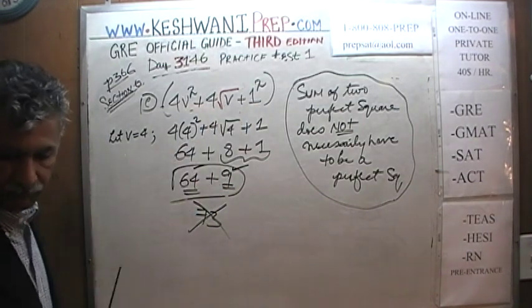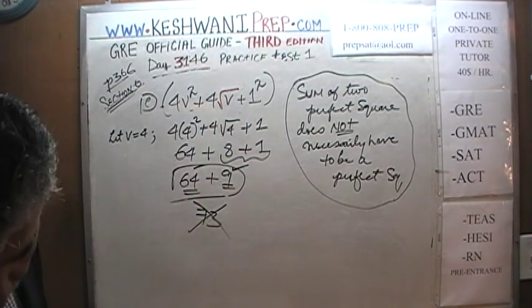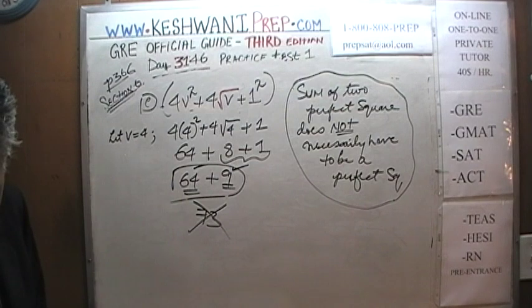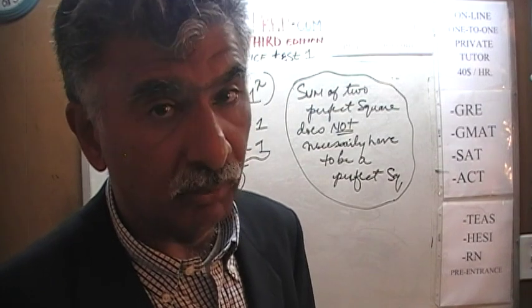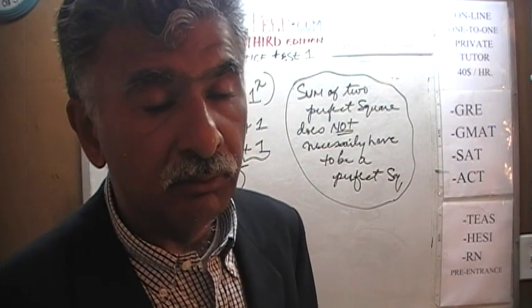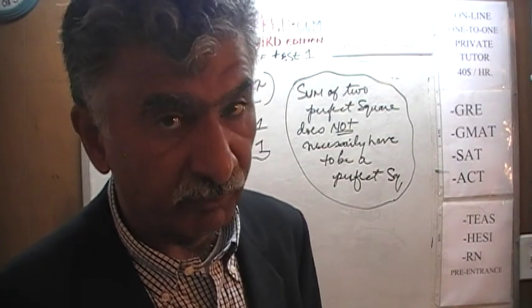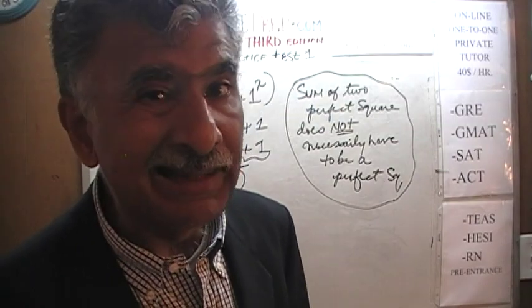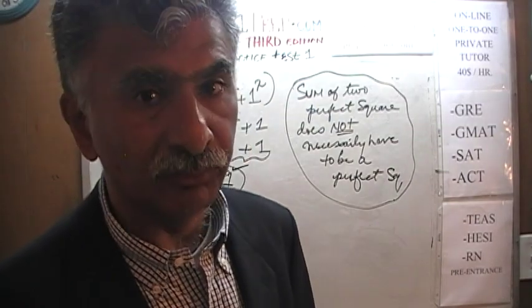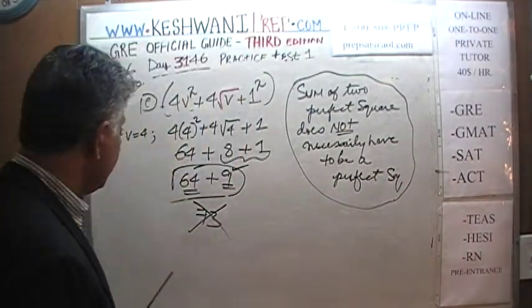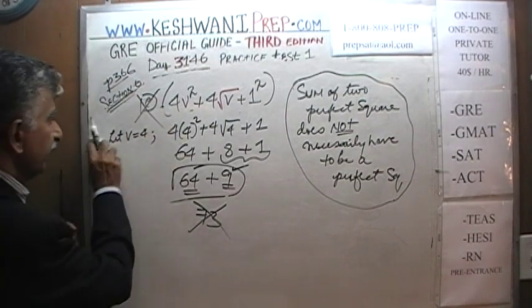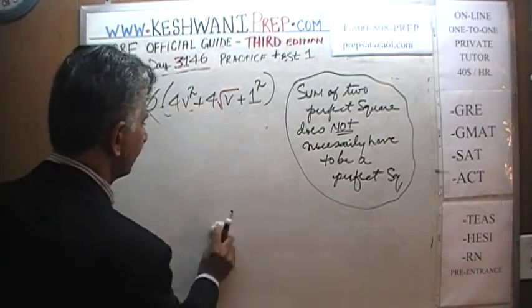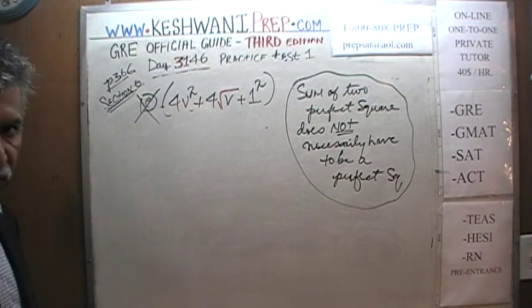People in their haste might think: 64 is a perfect square and 9 is a perfect square, so their sum must be a perfect square. Not necessarily so. The sum of two perfect squares does not necessarily have to be a perfect square. We cannot claim the sum of two perfect squares is always a perfect square — though the product of two perfect squares is always a perfect square.